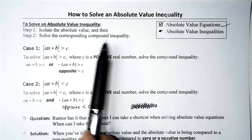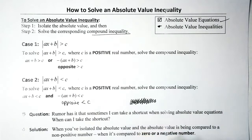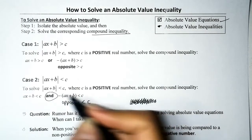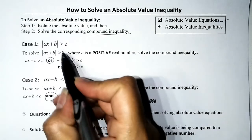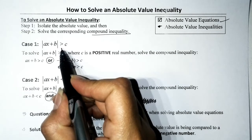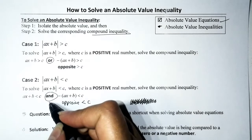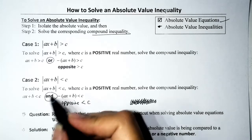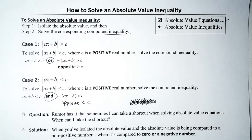When it comes to solving absolute value inequalities, the corresponding compound inequality may either be an AND compound inequality or an OR compound inequality. If you have greater than or greater than or equal to, it's going to be an OR compound inequality. If you have less than or less than or equal to, it's going to be an AND compound inequality.